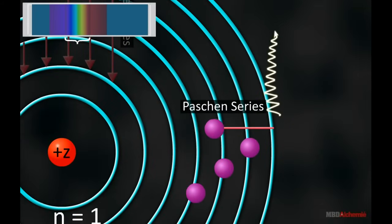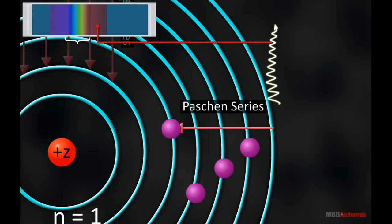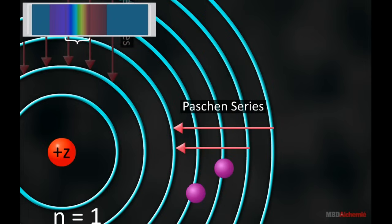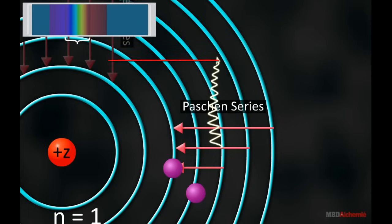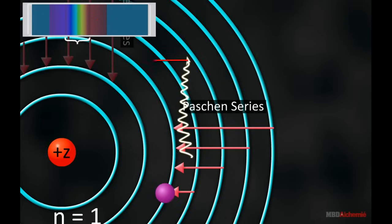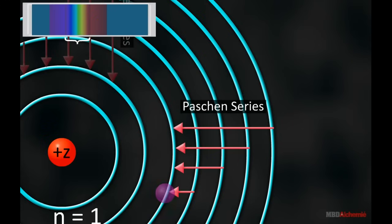When a transition from higher orbits to the third orbit occurs in the atom, the Paschen series is obtained. The values of frequencies obtained in this transition lie in the infrared region of the electromagnetic spectrum.